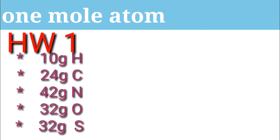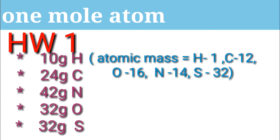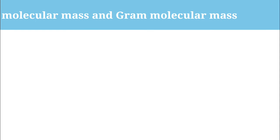What is the number of moles of the following elements? 1 mole of atom, 2 moles of atom, 3 moles of atom. The 4th one: 32 grams of oxygen. Next: 32 grams of sulfur. Provided atomic masses: hydrogen 1, carbon 12, oxygen 16, nitrogen 14, sulfur 32. Okay, this is the first topic.